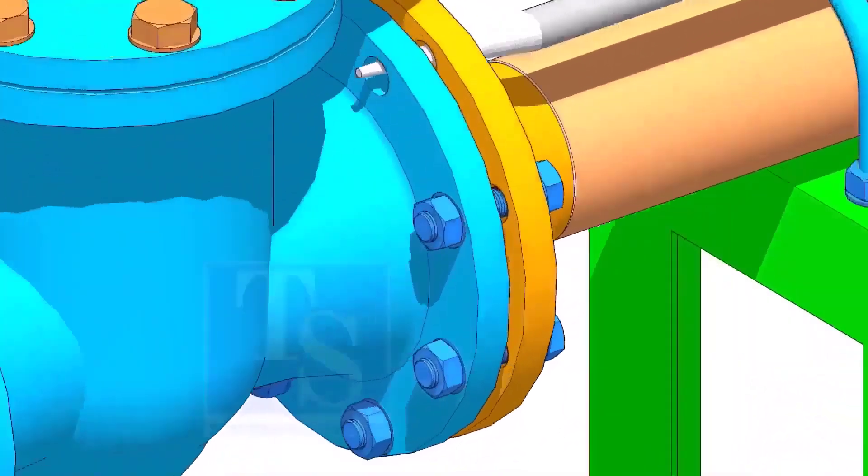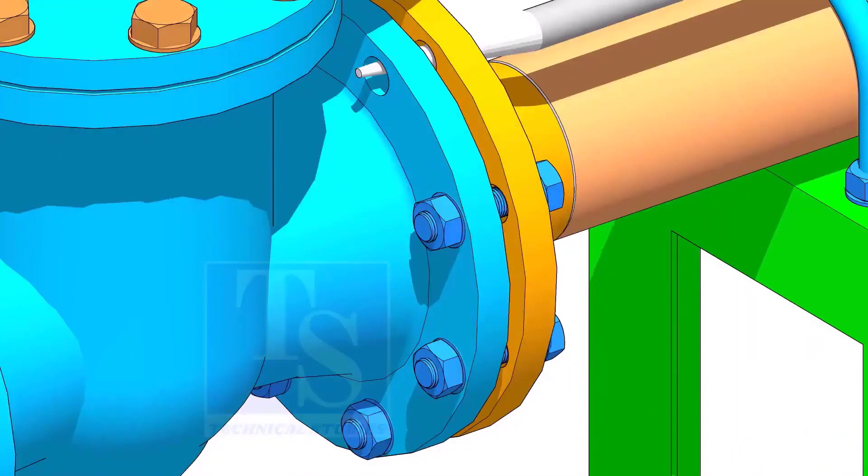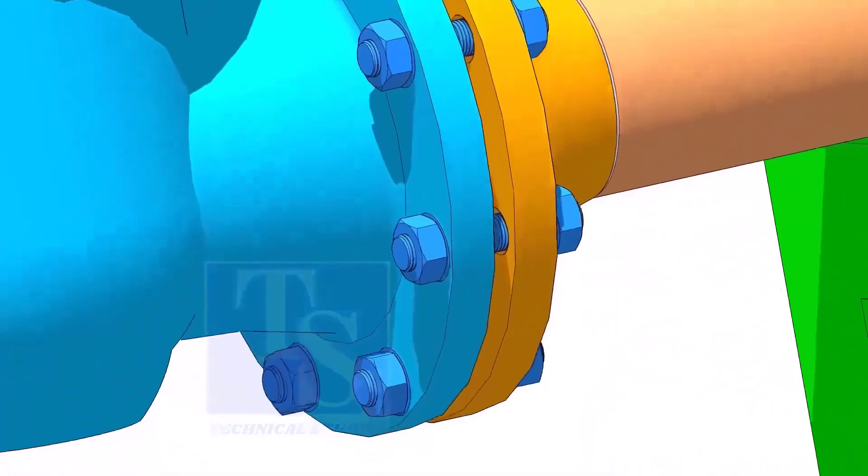If the flange overlap, the gasket position, etc. is in the acceptable limit, hand tight the bolt. Use an aligning bar for this.